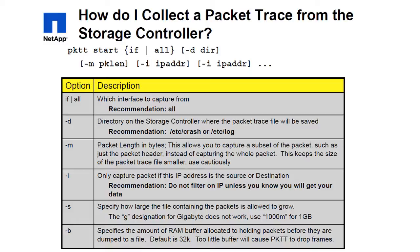The -m option sets the packet length at which packets will be truncated. The default is 1500 bytes, which results in full packets for Ethernet. The -i option specifies the IP address. We recommend using all IP addresses.